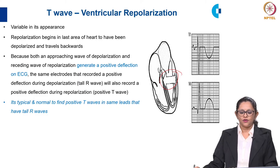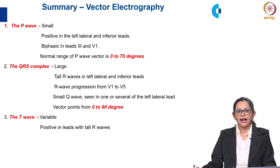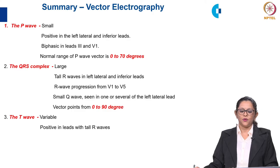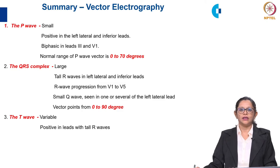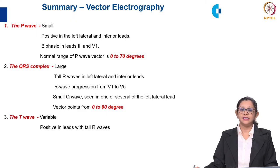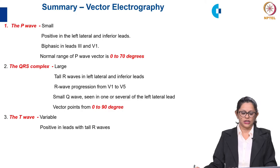It is typical and normal to find positive T waves in the same leads that have tall R waves. To summarize the vector aspects of electrocardiography: the P wave is small and positive in left lateral and inferior leads, biphasic in V1 and V3, with a normal P wave vector of 0 to 70 degrees. The QRS complex is large with tall R waves in left lateral and inferior leads, with R wave progression from V1 to V5, a small Q wave in left lateral leads, and the QRS vector points from 0 to 90 degrees — very important for axis determination. The T wave is positive in all leads along with the R wave.